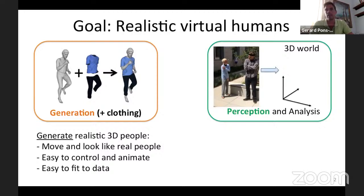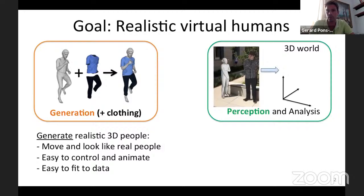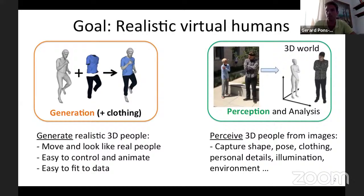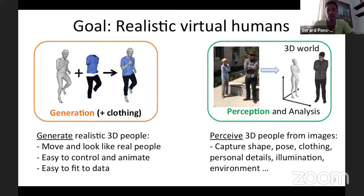In computer vision there's been a huge trend over the last 10 years in detecting people in images, estimating their 2D and 3D key points. But I'm not interested in just these sparse representations — I want to capture everything we see: geometry, texture, illumination, personal details. As you can imagine, these two goals of generation and perception are intertwined, and having a good generative model helps you perceive digital humans in images. These two goals should be addressed simultaneously.